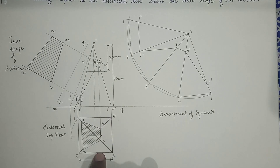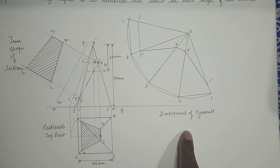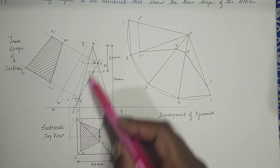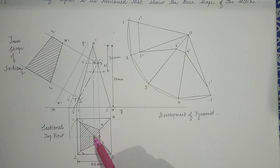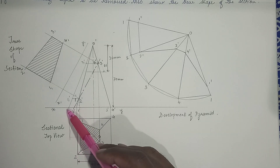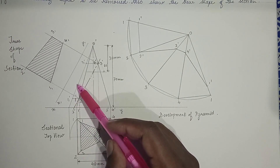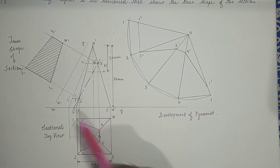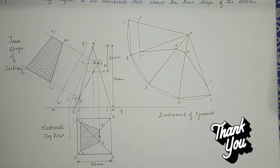So the sectional front view, sectional top view, true shape of the section, and development of the pyramid are all complete. I hope you have understood the problem and the concept. What was new in this problem is that the slant height is not parallel to VP or XY — so we make it parallel to VP, rotate it, transfer the distance, and get the true slant height. With that true slant height as the radial distance we draw the arc and transfer the points to get the development. Thank you dear students, please do like and have a good day.